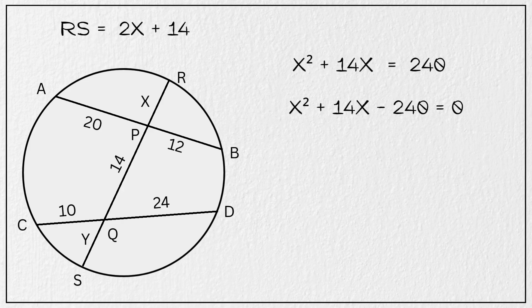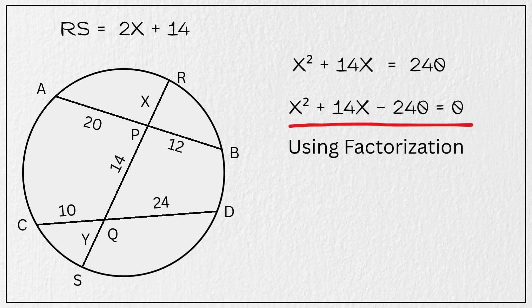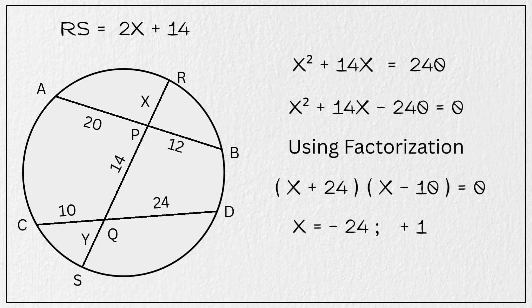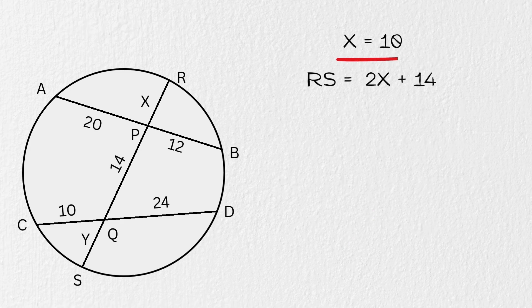Subtracting 240 from both sides, we get X squared plus 14X minus 240 equal to 0. Now using factorization, this equation can be rewritten as X plus 24 multiplied by X minus 10 equals 0. So X is equal to negative 24, or positive 10. But since length cannot be negative, we discard negative 24, thus we have X is equal to 10.